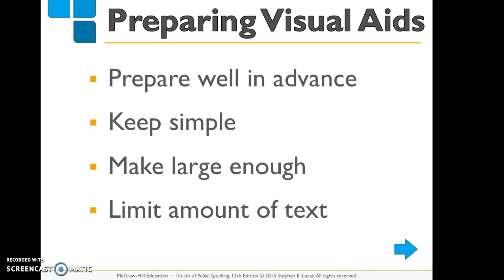Make sure you prepare your visual aids well in advance — it's easy to see if a student threw together their PowerPoint the night before. Also, keep your visual aids simple. I always say the six-by-six rule: do not use more than six words in a line and no more than six lines on one presentation aid. The current slide does that well — there are only four bullets and definitely less than six words per line. Make sure your text is large enough; 48 point works very well. The six-by-six rule is perfect for PowerPoint presentations.